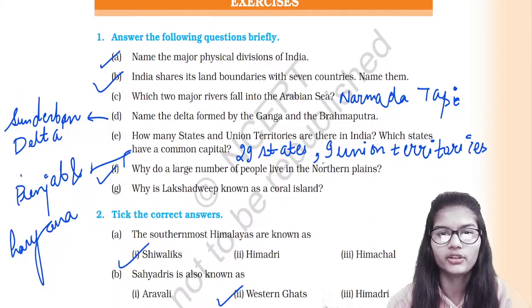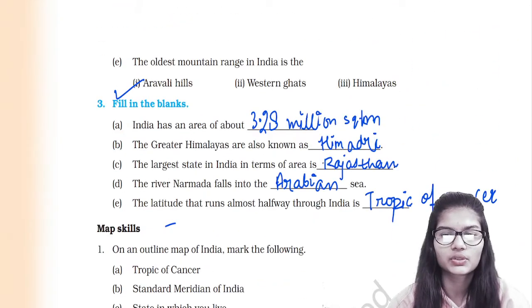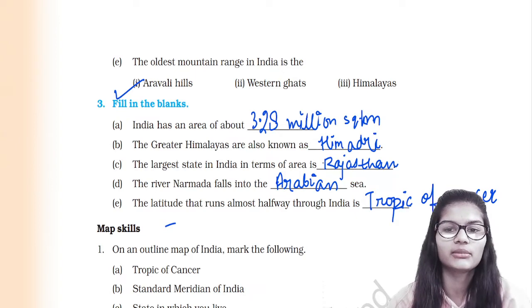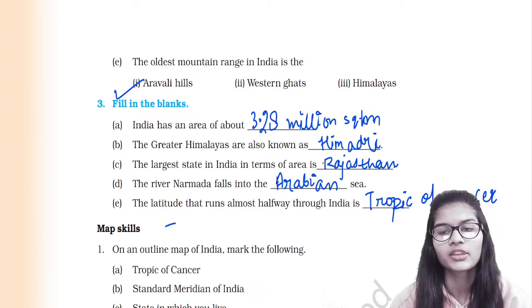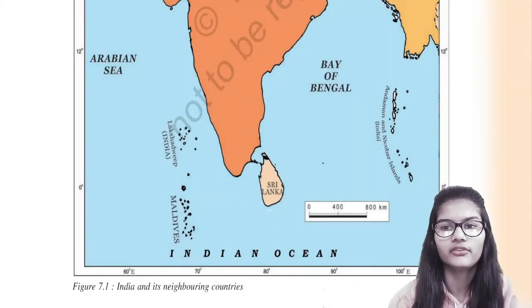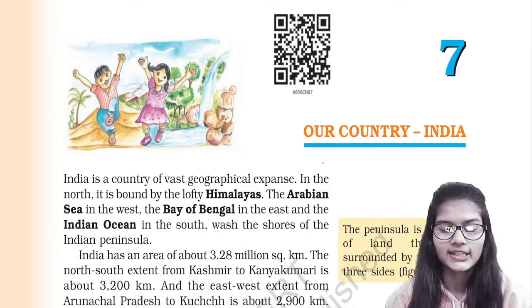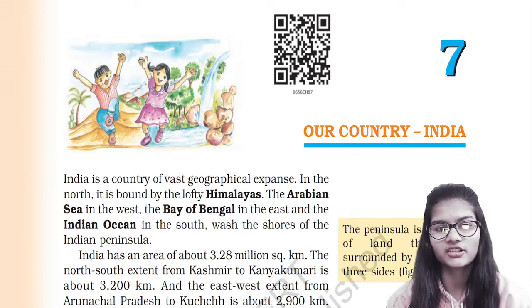We have now discussed all the following questions — the answer the following section, the take the correct answers section, and the fill in the blanks. I had told you to pause the video and fill up all the questions yourself, and hopefully you have verified and rectified any mistakes. Our complete chapter 7, 'Our Country India,' is now finished with all exercises. If you liked this video, please share it with your friends, subscribe to our channel. Thank you and take care. Jai Hind.